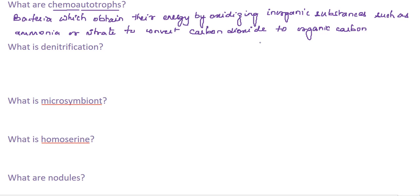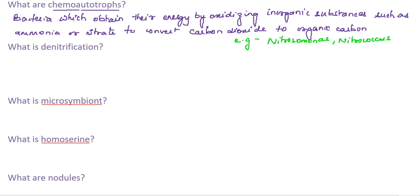Can you tell me a few examples of chemo-autotrophs? Examples were discussed in the last question. Nitrosomonas — what do Nitrosomonas do? They convert ammonia to nitrite. In a lot of exams, this question comes where they ask you about the bacteria involved. Ammonium to nitrite is Nitrosomonas, and nitrite to nitrate is Nitrobacter.